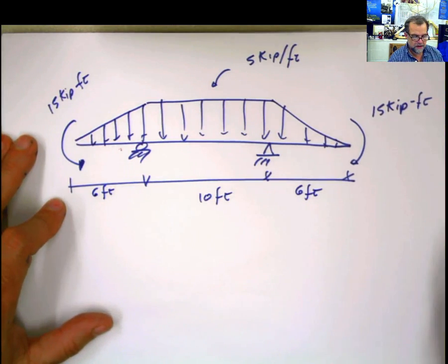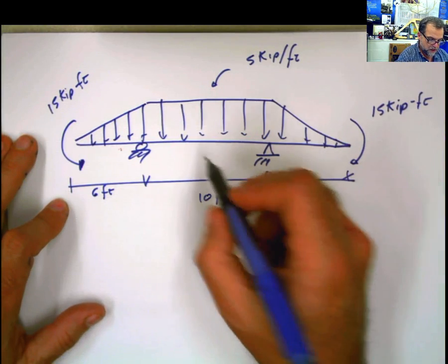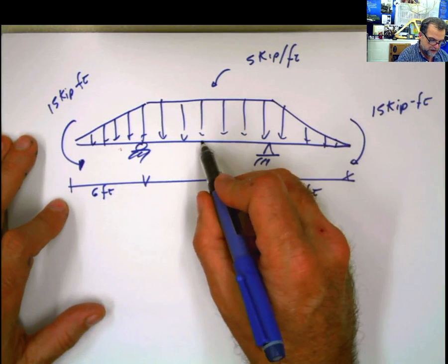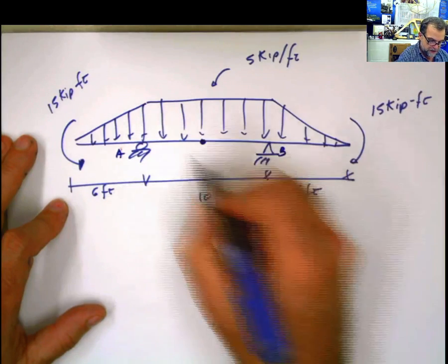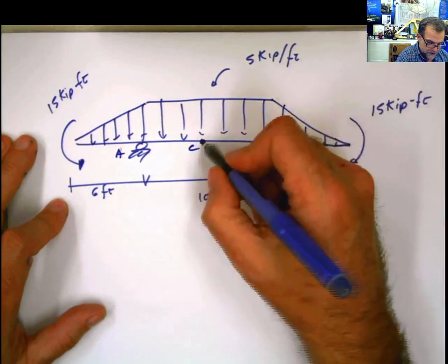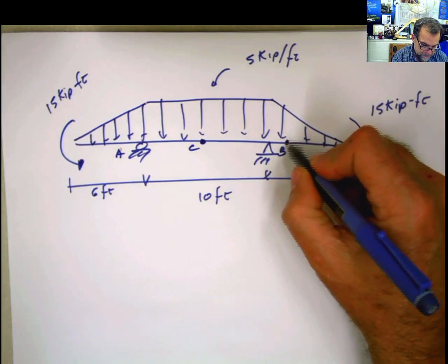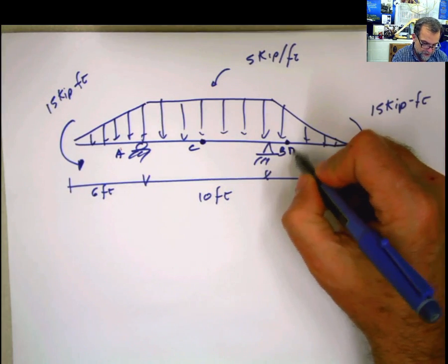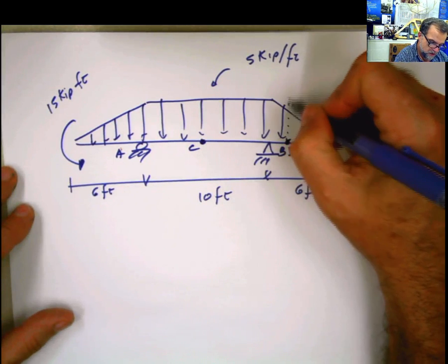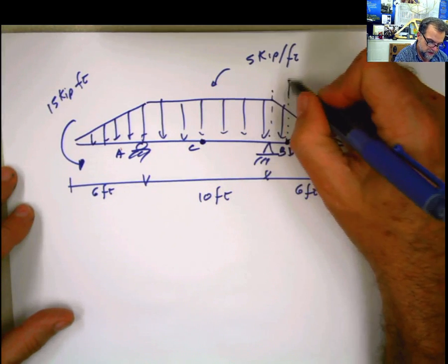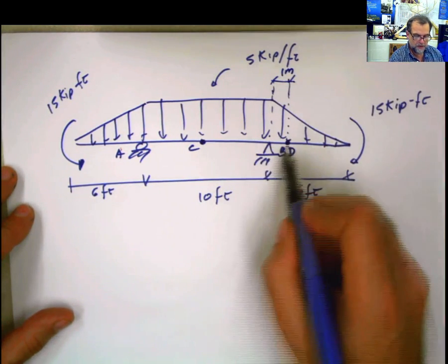Those are the distances. We have to calculate the internal forces at point C and at point D. Point D is located one foot from this side.